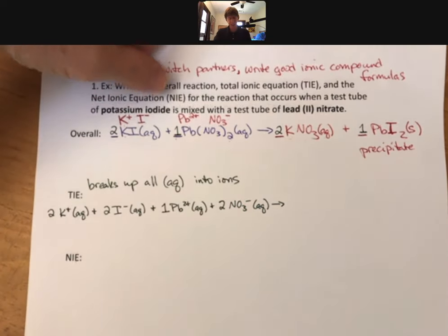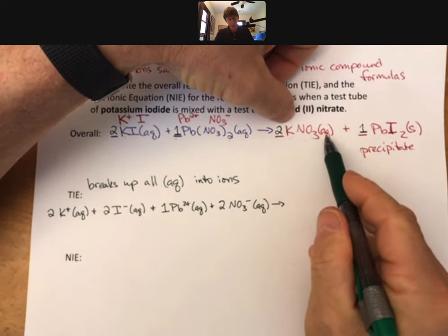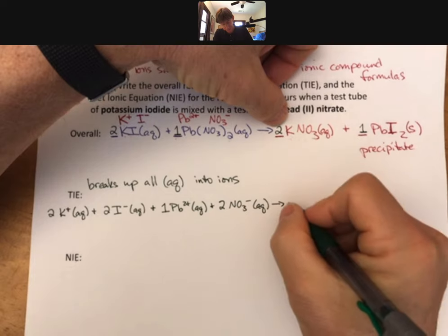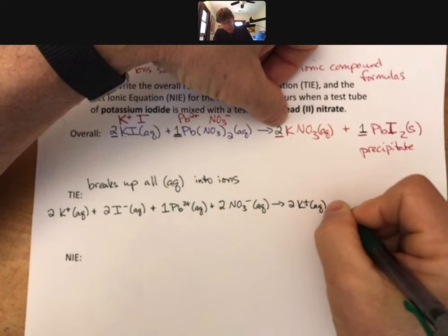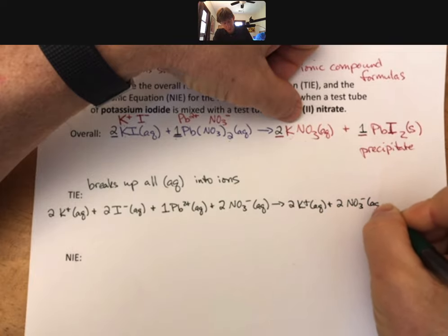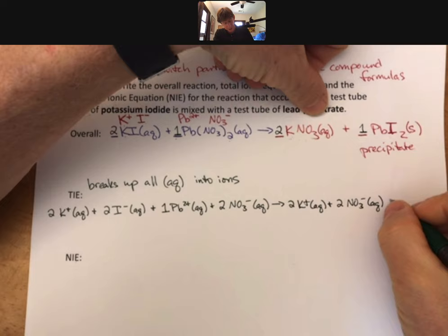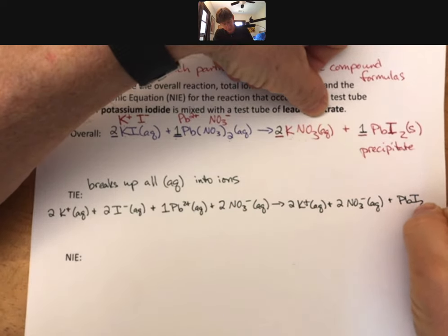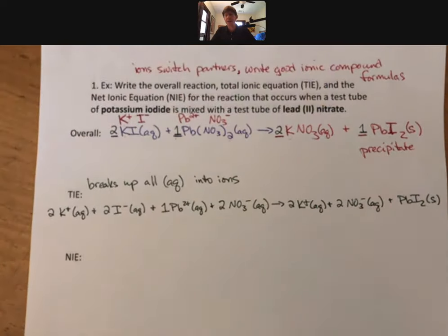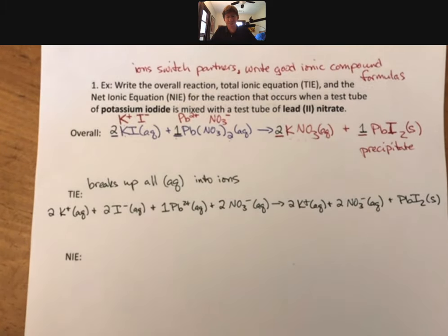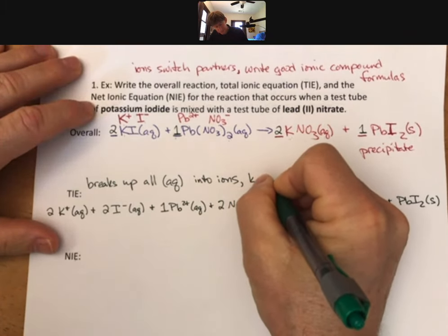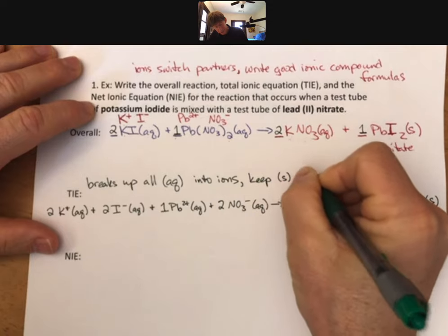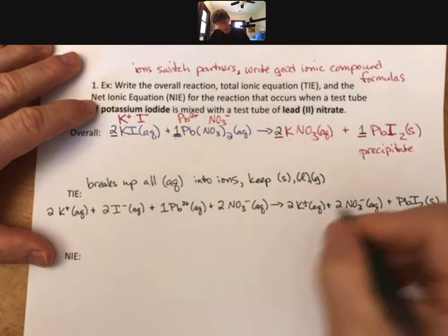Aqueous. Then I get to my arrow, and now I have an aqueous, so there's still 2K+ aqueous plus 2 nitrate. And you do need to have charges and phases for all of these. Plus - and I don't need my 1, you can put it, but you don't have to - and this is my solid. And the solid does not break up because it's a solid. It sticks together. And that is my total ionic equation. Break up all aqueous into ions, keep solids, liquids, and gases.